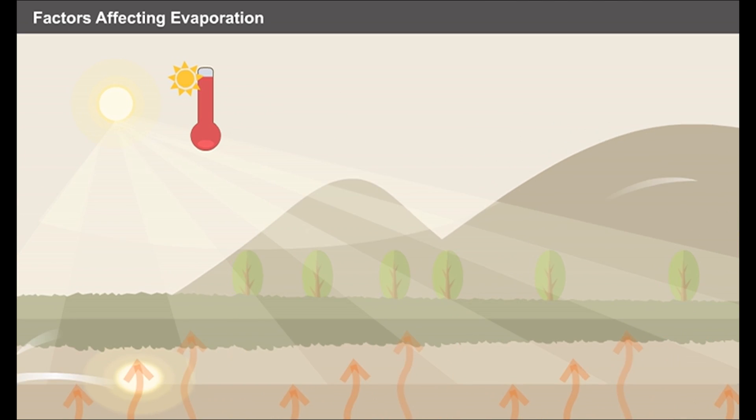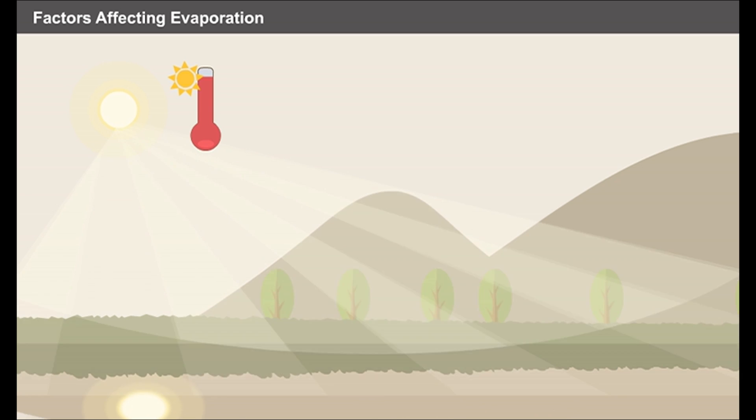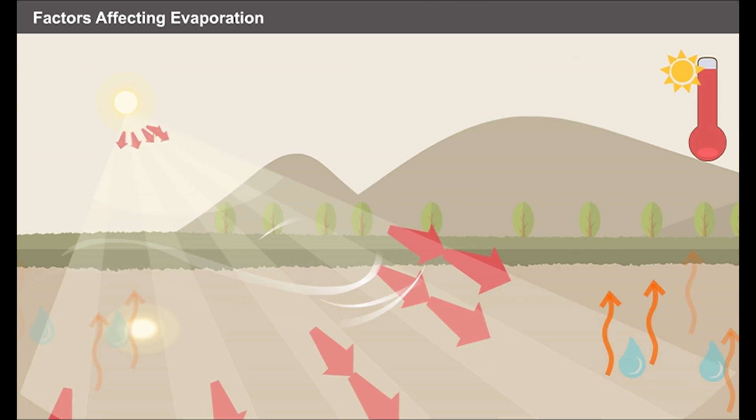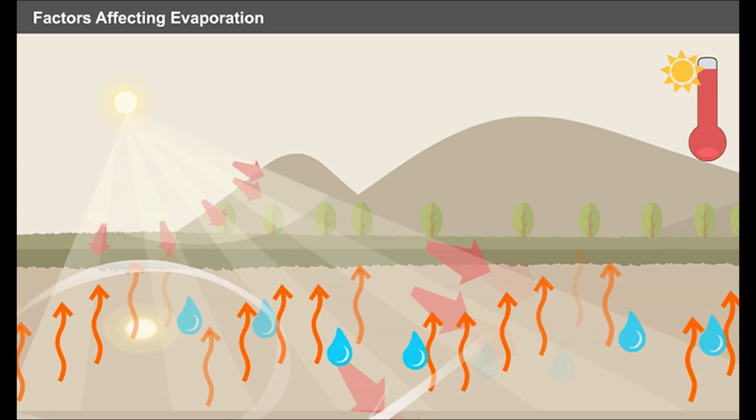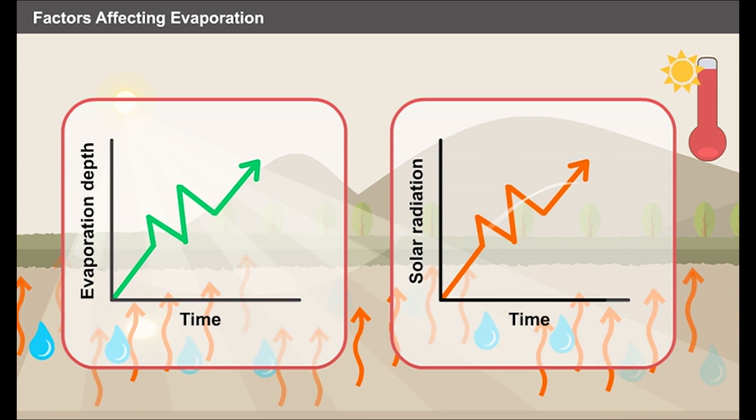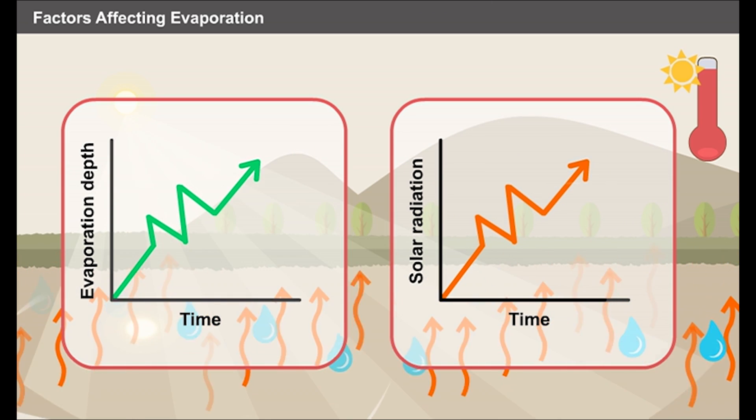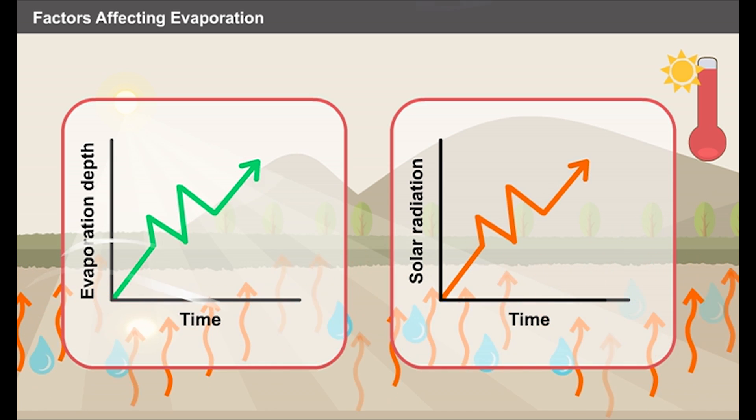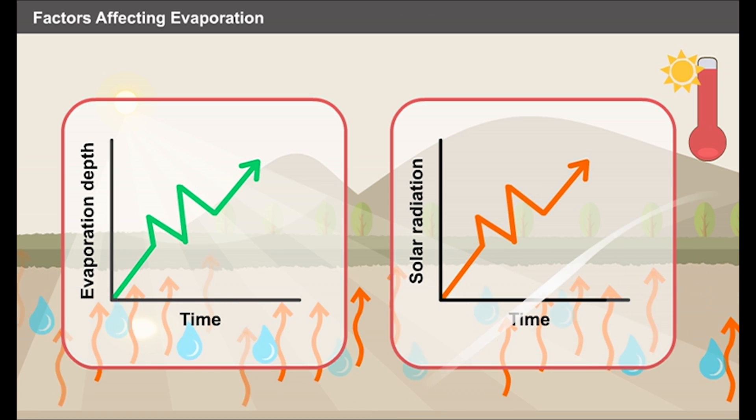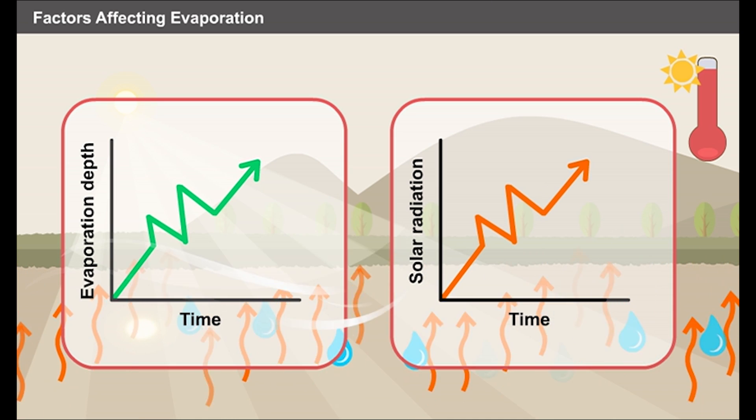Usually, the temperature of an area depends on the radiation of sun. Radiation is nothing but the heat energy released from the sun. When radiation increases, the evaporation increases. This can be demonstrated by plotting two different graphs between evaporation depth against time and solar radiation against time. The two graphs clearly show that radiation and evaporation are directly proportional to each other.